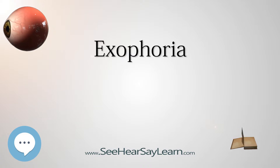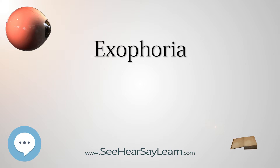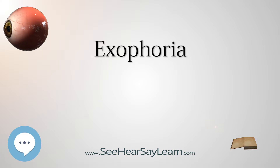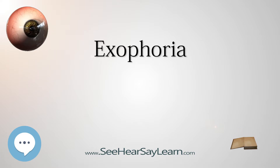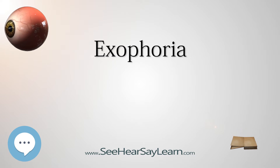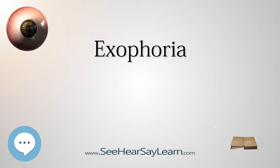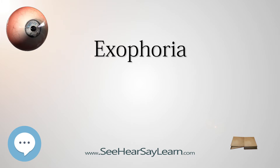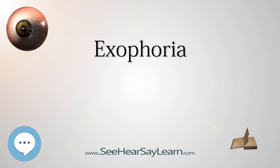Exophoria can be caused by several factors, which include: Refractive errors, where distance and near deviation are approximately equal; Divergence excess, where exodeviation is more than 15 diopters greater for distance than near deviation; and Convergence insufficiency, where near exodeviation is greater than distance deviation. These can be due to nerve, muscle, or congenital problems, or due to mechanical anomalies.